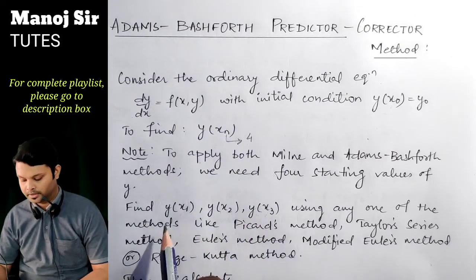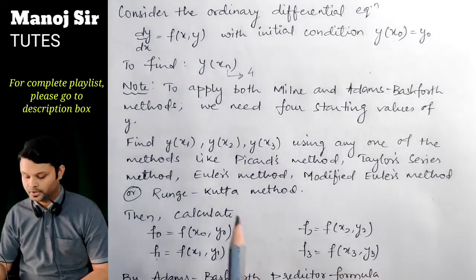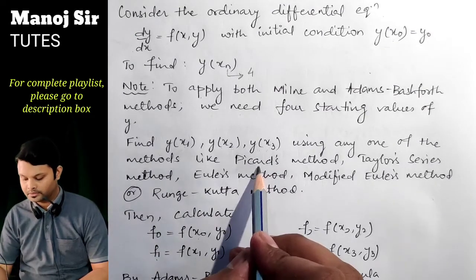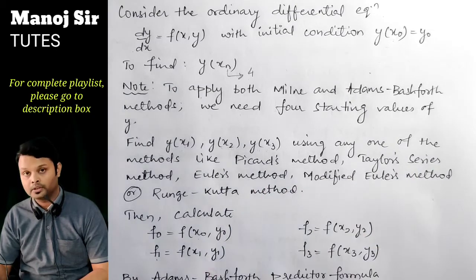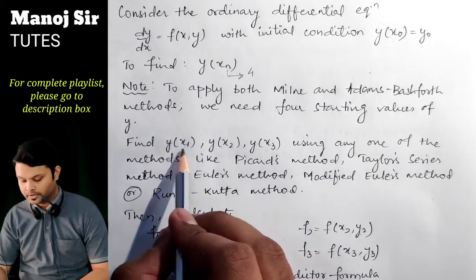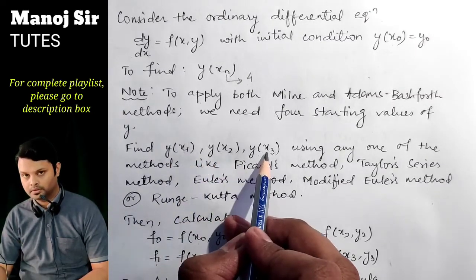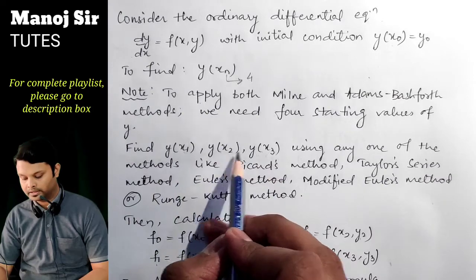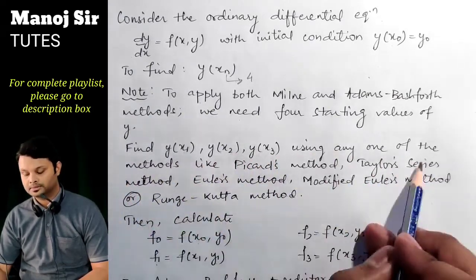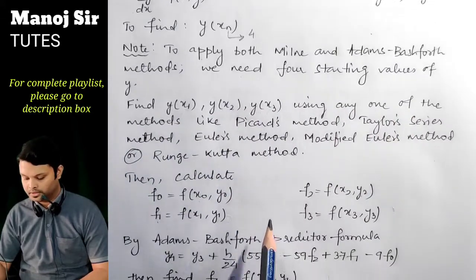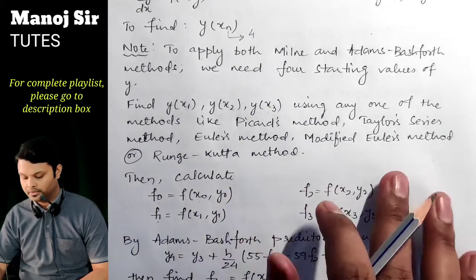If y at x₁, y at x₂, and y at x₃ are not given, you need to use any one of the following methods — Picard's method, Taylor series method, Euler's method, modified Euler's method, or Runge-Kutta method — to find those values. If these values are already given, skip this step. Then calculate f₀, f₁, f₂, and f₃.